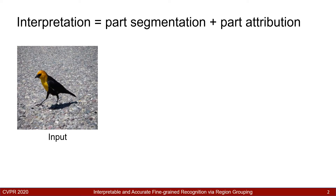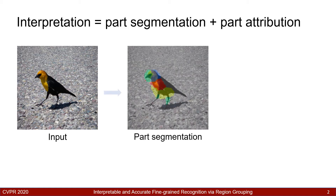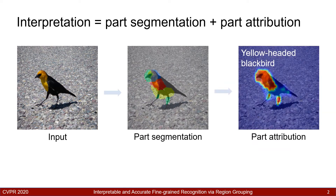How can we design an interpretable deep model for fine-grained classification? We propose a deep model that learns to segment object part regions, as shown in the middle, and to focus on important part regions for classification, as shown on the right. The part segmentation and attribution provides an interpretation of the decision. Importantly, our model only requires image-level labels during training, without the need for segmentation masks or object boxes.